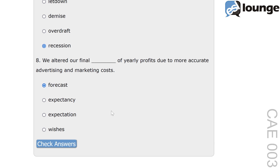The main distractor in this question is expectation. Expectation generally refers to a belief about what should happen, such as 'She had higher expectations for her new job,' where it implies a personal or subjective outlook. In contrast, forecast is more objective and often data-driven, making it suitable for contexts like financial planning. Forecast describes a prediction based on analysis. That's all for today from ESLLounge.com. Thanks for joining me.